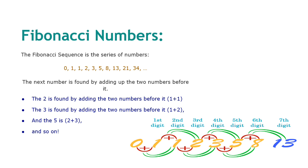It is a series of numbers starting from 0 where every number is the sum of the two numbers preceding it. For example, the number 2 is found by adding the two numbers before it, 1 plus 1, and 3 is found by adding the two numbers before it, which is 1 plus 2, and then 5 is 2 plus 3, and so on till infinity.